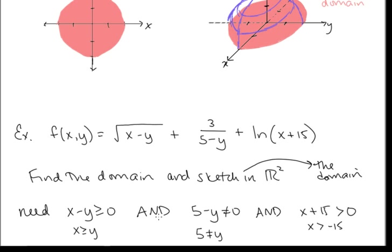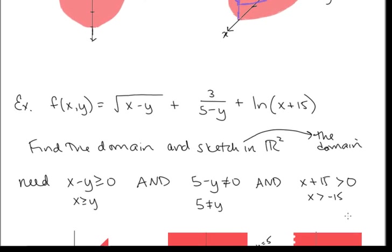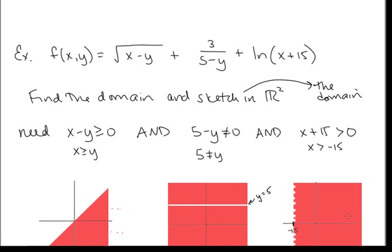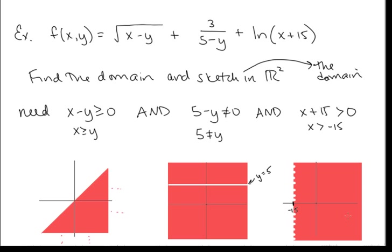So the three conditions are: x − y ≥ 0, 5 − y ≠ 0, and x + 15 > 0. Let's look at what each of these restrictions individually looks like in two-dimensional space, and then put them all together to get the domain — which is the intersection of all these sets.